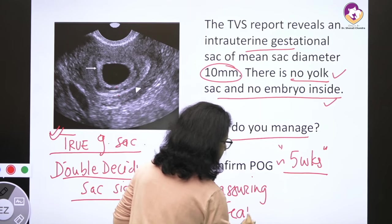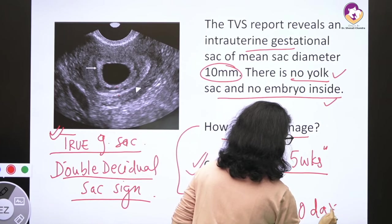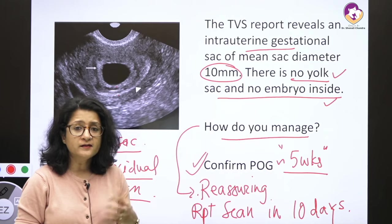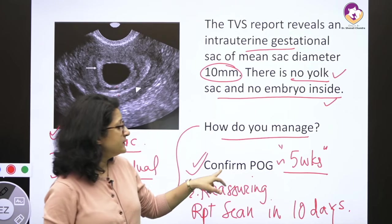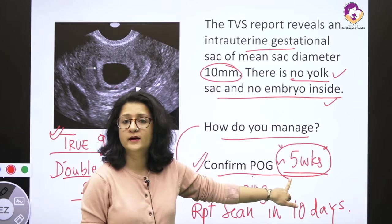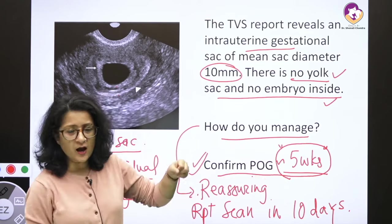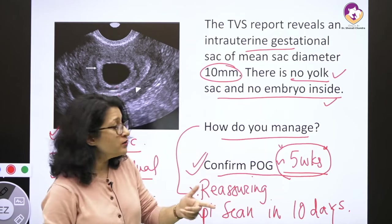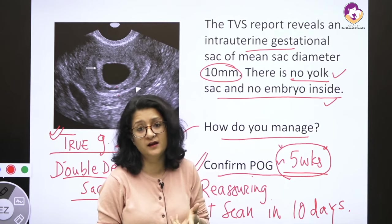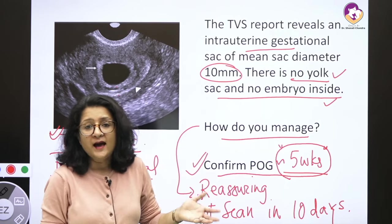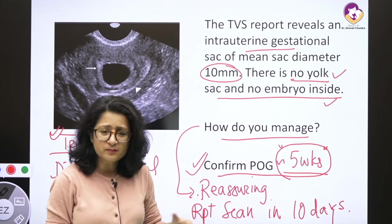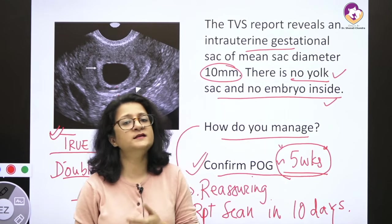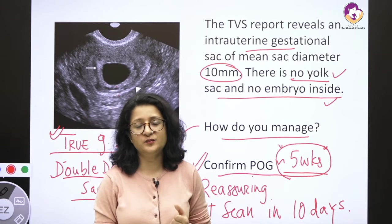We repeat the scan in another 7 to 10 days to see whether the yolk sac has appeared. An important point is that confirmation of gestational age based on LMP can be unreliable — the woman may have miscalculated, which could mean losing a normal pregnancy. Benefit of the doubt is always given. We must not jump to the conclusion of early pregnancy loss without repeating the scan.